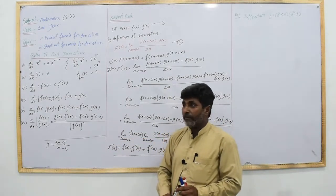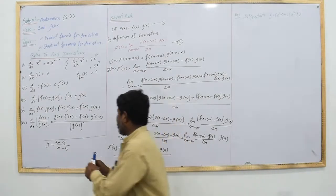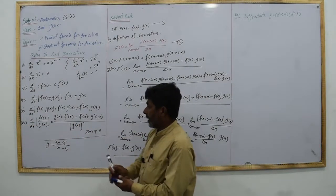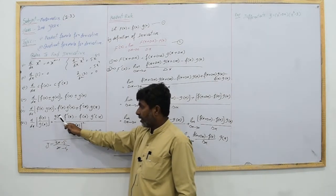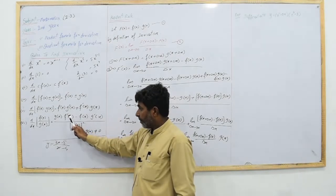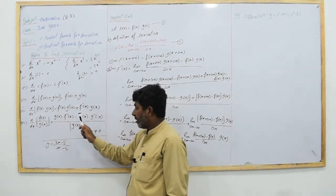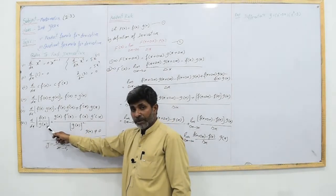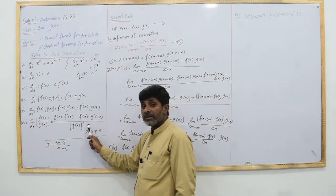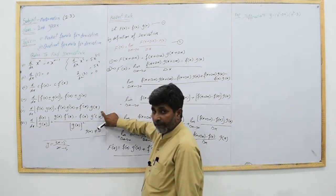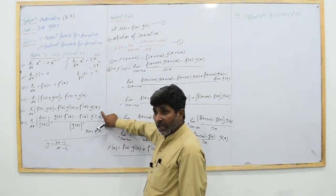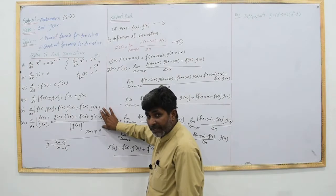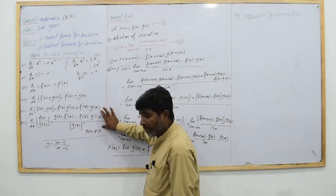Next, the quotient formula for derivative: if two functions are divided and g(x) is not equal to 0, then the derivative of f(x)/g(x) equals [g(x) times derivative of f(x) minus f(x) times derivative of g(x)] divided by [g(x)]². This is the quotient formula for derivative. Its proof is left as an exercise — the proof is available in the book, but you must prove it yourself.